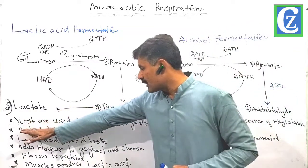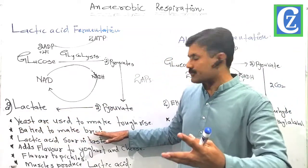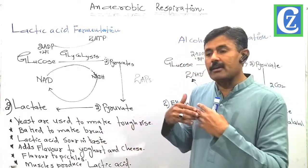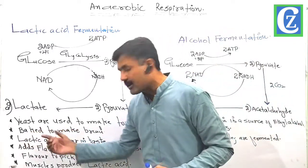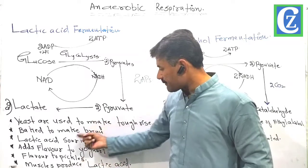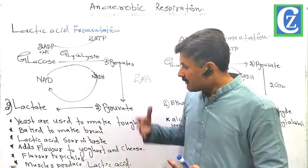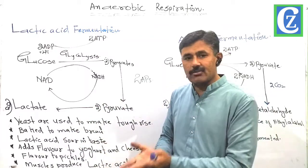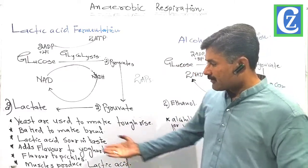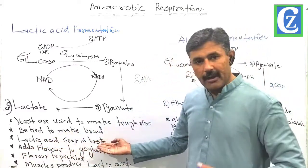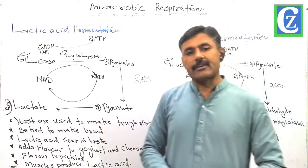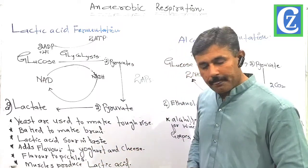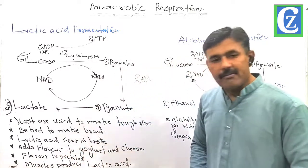For example, we use yeast in order to produce dough, which is then shaped and baked into bread. We can use fermentation to help us produce the dough, and that dough can be baked to produce bread. We also use lactic acid — as it gives a souring taste — to add flavor to different things such as cheese, yogurt, and pickles.